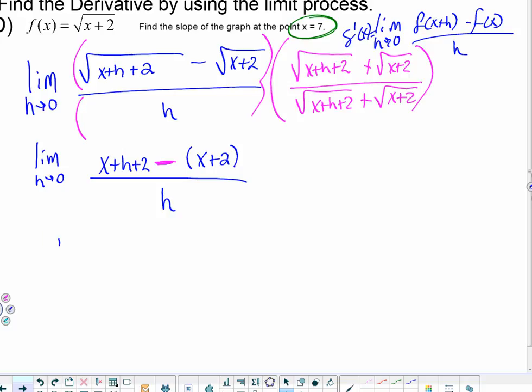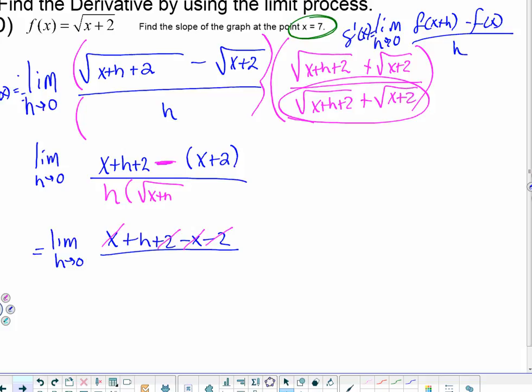The next thing I'm going to do is distribute that negative. Then let's simplify. Summing things up, I get x with negative x goes to 0. A 2 with negative 2 makes 0. I get h over h. I see what I did, I lost track of this. I have h times square root x plus h plus 2 plus the square root of x plus 2.